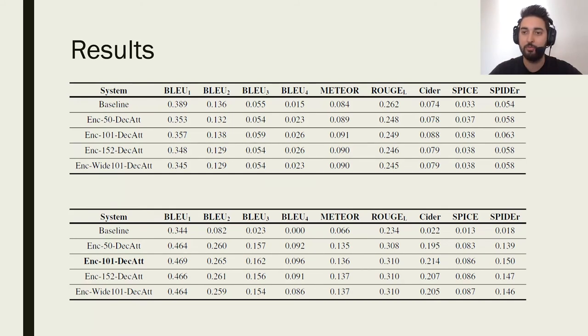The table below corresponds to the metrics obtained by our systems on the testing split, that is, the one used for the ranking. In this case, the captions have been calculated using the beam search algorithm. In the table, you can see how well the system improves the baseline system considerably. ResNet 101 is the network that behaves best as an encoder, obtaining a value of 0.15 in the SPIDEr metric, being 0.018 the baseline.